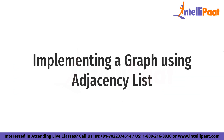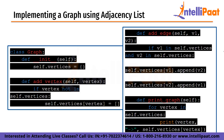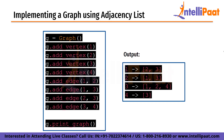Here is an example of how to implement an undirected, unweighted graph using an adjacency list in Python. The addVertex method adds a vertex to the graph, the addEdge method adds an edge between two vertices, and the printGraph method prints out the graph in a readable format.